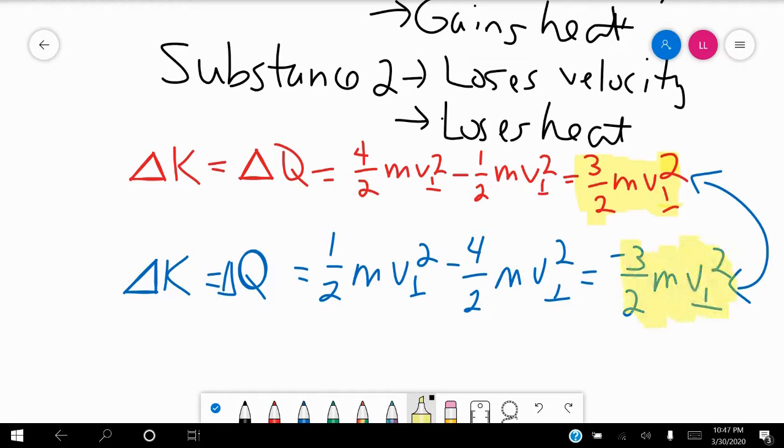And again, the answer to the second question would be that the heat is going to move from substance two to substance one, because prior to the collision, substance two was moving faster, which signifies that it has a higher temperature.